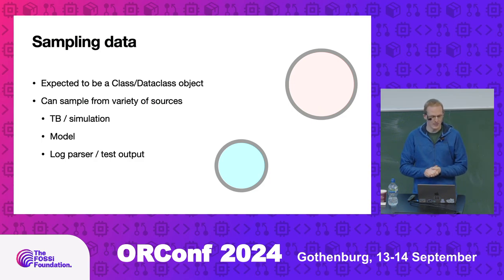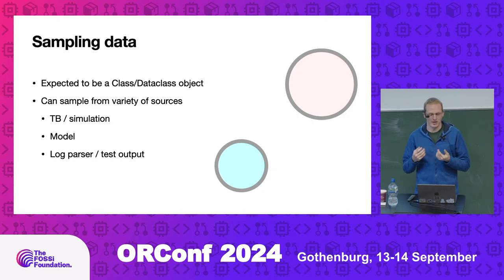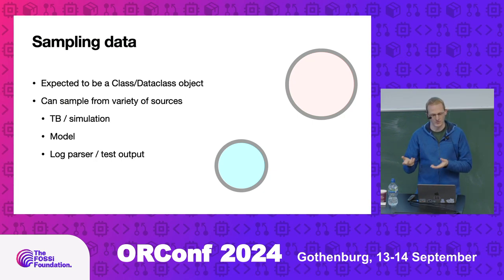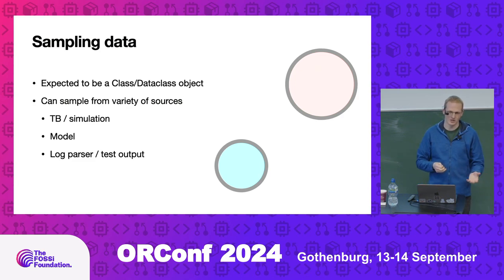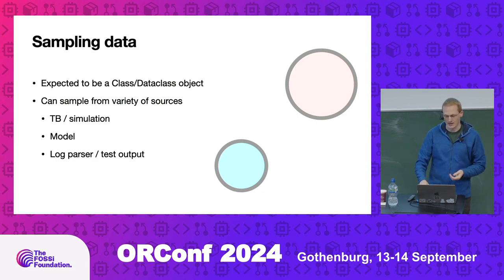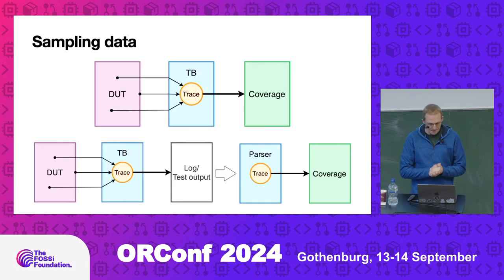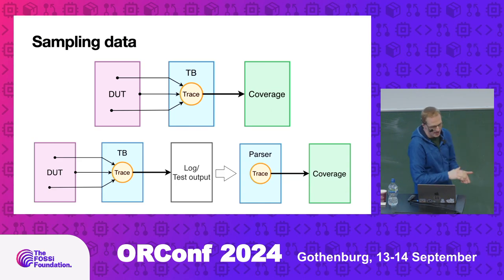We can sample from anywhere — as long as you make your trace object, it can be straight from the testbench or from your simulation. You can run it straight against your model, or, if you've saved your test output or logs in sufficient detail to recreate your test object, that allows you to run against that instead.